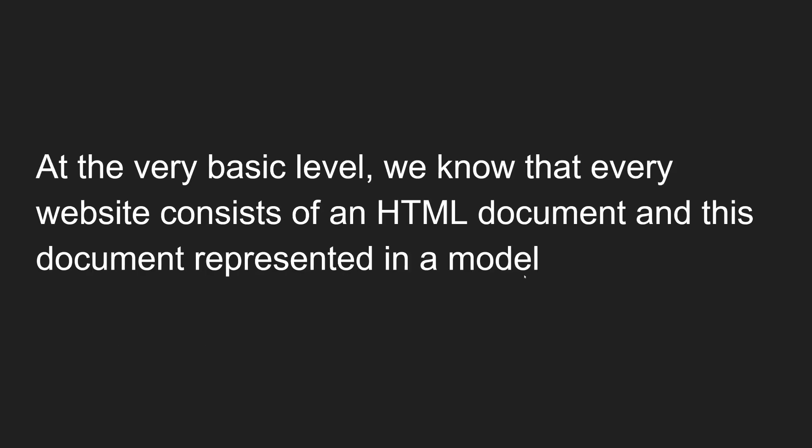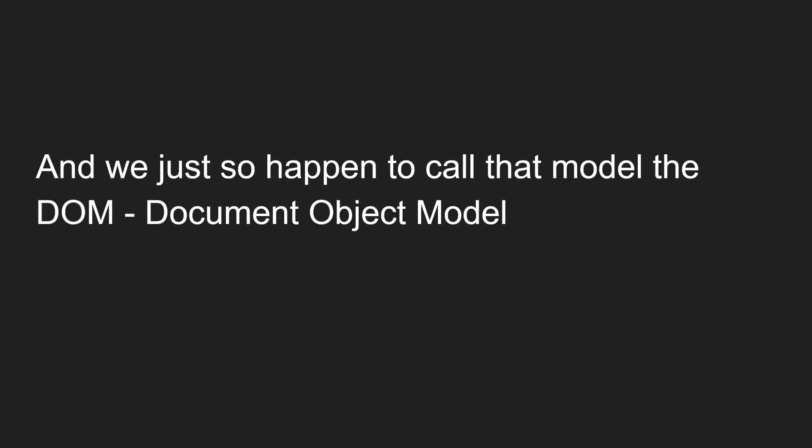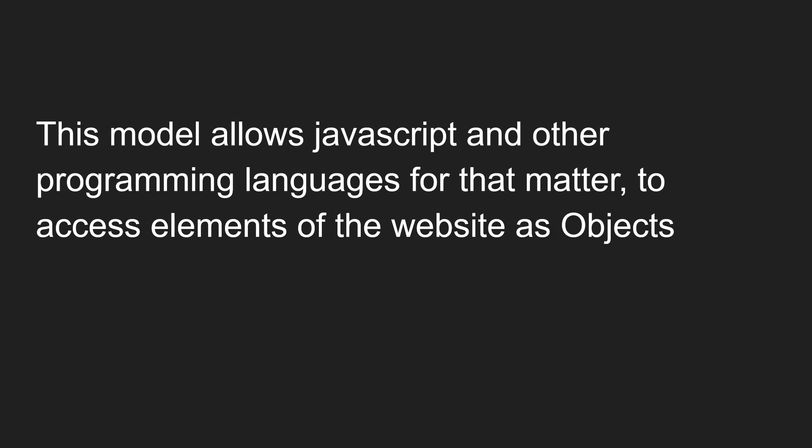At the very basic level, every website consists of an HTML document. This document is represented in a model — that is nothing but the Document Object Model. In the browser, the HTML document is represented in a hierarchical tree-like structure, and that is nothing but the DOM. That model is what we call the DOM.